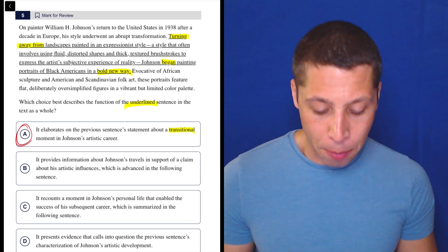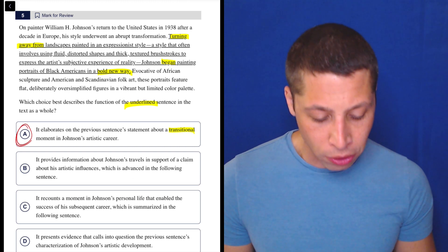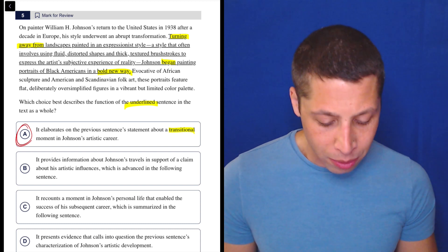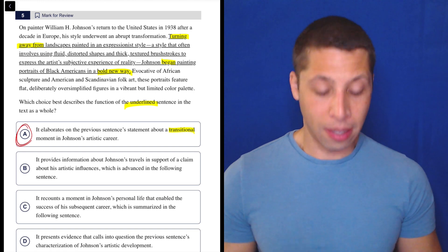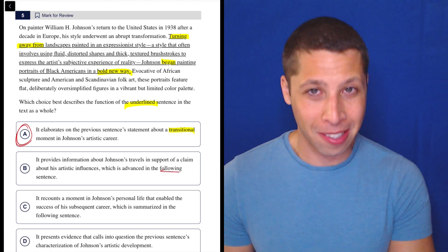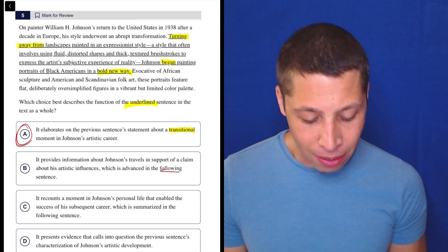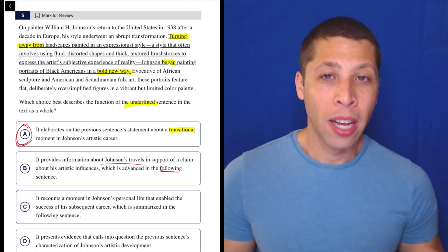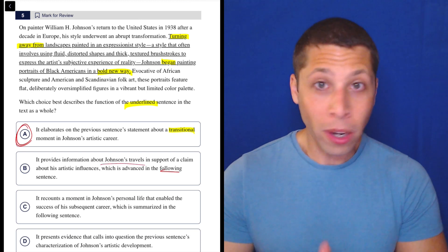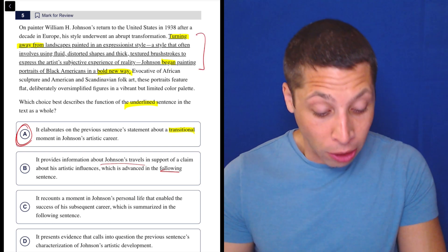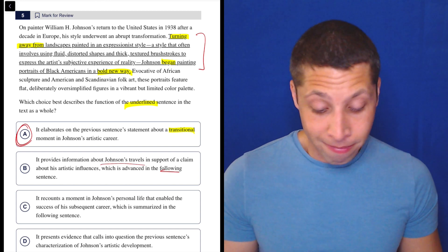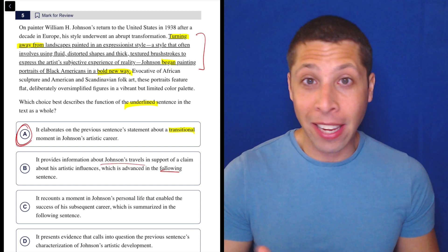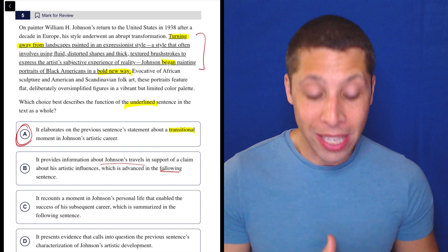So B, it provides information about Johnson's travels in support of a claim about his artistic influences, which is advanced in the following sentence. So ignoring the piece here about what comes next, let's just focus on what happens in this sentence here. It provides information about Johnson's travels. Turn that into a question. What do they say about Johnson's travels? Looking at this sentence, nothing, right? They're talking about his style. That's it. The style is it. And they give us a lot of description about it, but that's all we get.